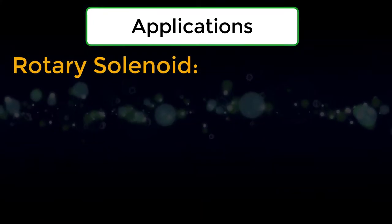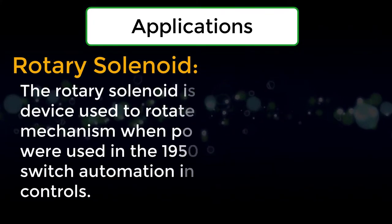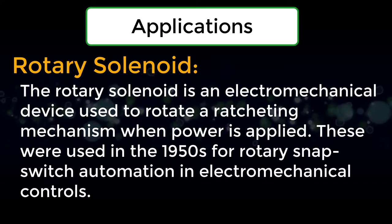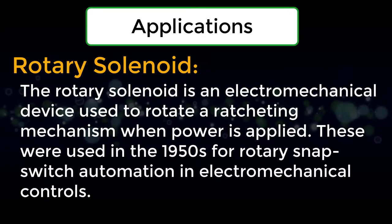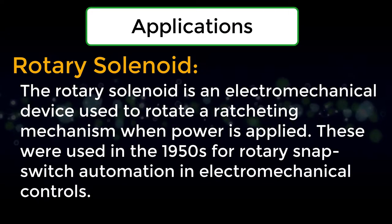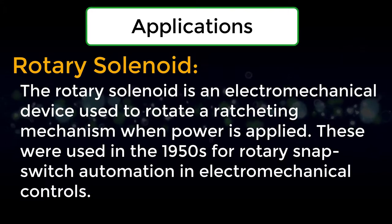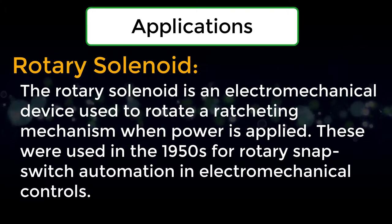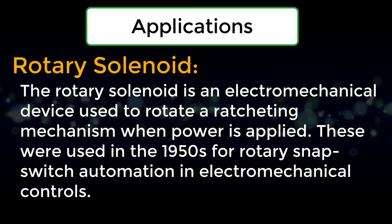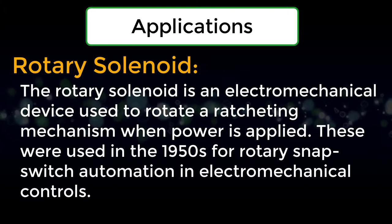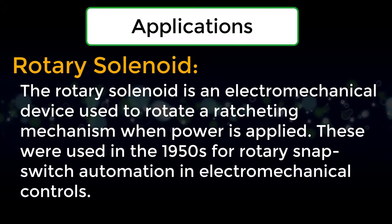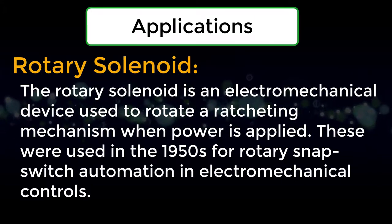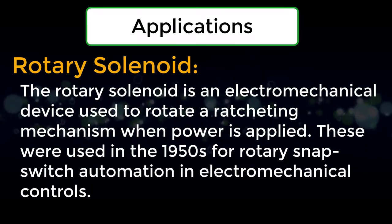Rotary solenoid: The rotary solenoid is an electromechanical device used to rotate a ratcheting mechanism when power is applied. These were used in the 1950s for rotary snap switch automation in electromechanical controls.